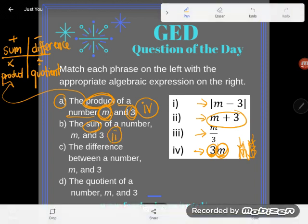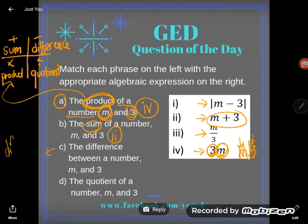Now C means the difference between a number m and 3, but be careful. There's a little distinction that most students don't know. Difference is always positive.